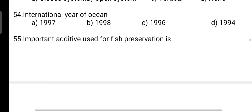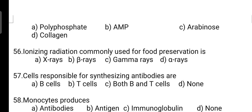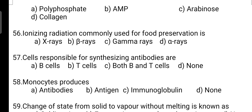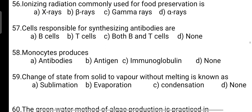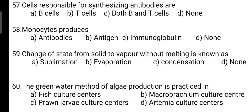Important additive used for fish preservation: correct answer is Option A — it is polyphosphate. Next, ionizing radiation commonly used for food preservation: correct answer is Option C — it is gamma rays. Cells responsible for synthesizing antibodies: correct answer is Option A — it is B cells. Next, monocytes produce: correct answer is Option A — antibodies. Change of state from solid to vapor without melting is known as: correct answer is Option A — it is sublimation.